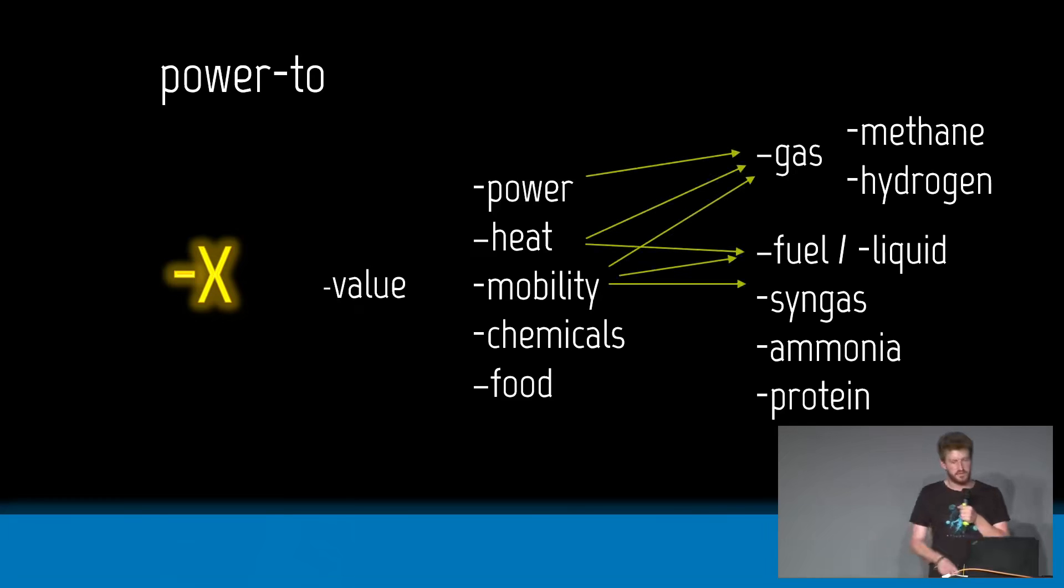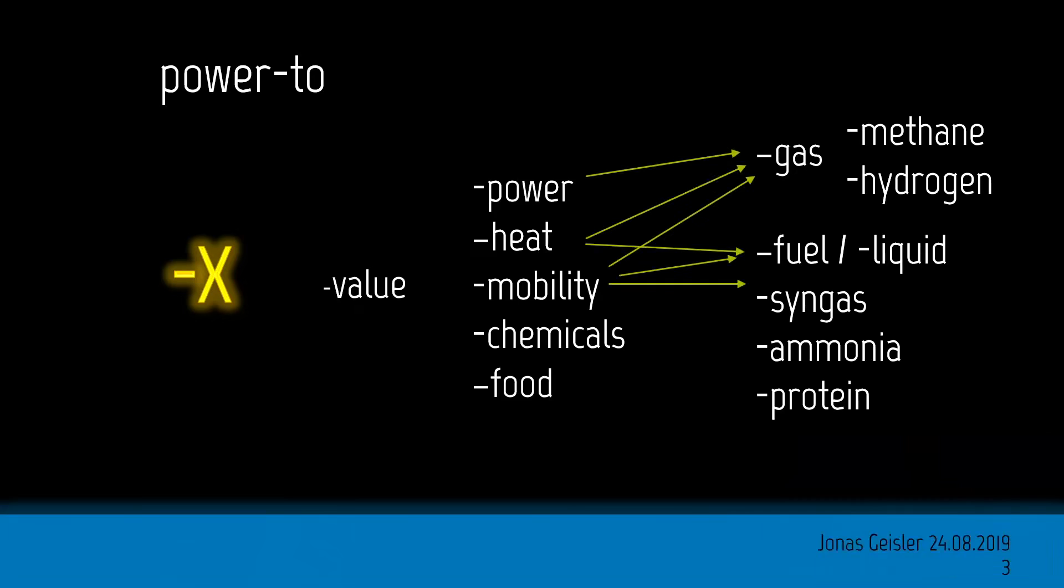Now, how they are interconnected. So, all these three energy applications refer mainly to gas and fuel, a little to syngas. The chemicals, of course, like when we're speaking of chemical products, that's all chemistry. And food is mainly ammonia due to fertilizer production and protein. But I won't talk too much about food, ammonia and proteins. I will mention ammonia at a certain point, but that's not the focus of the talk.